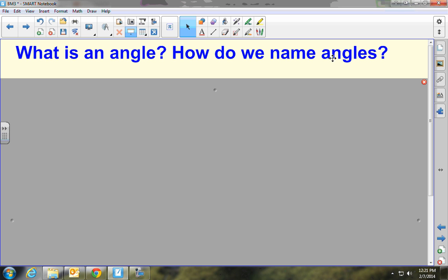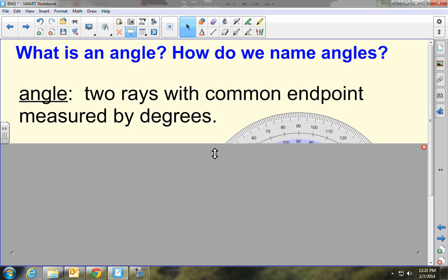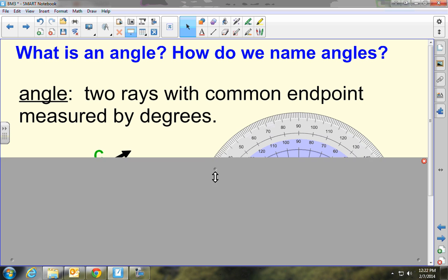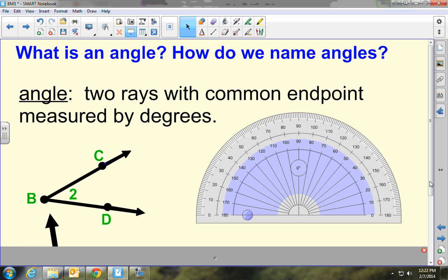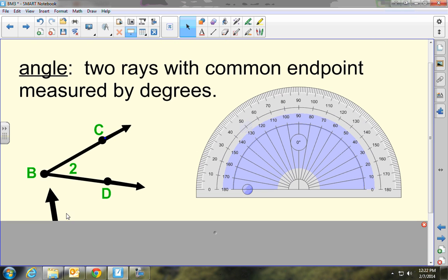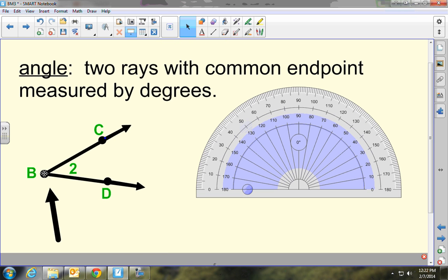Okay, so first off, let's start by defining what an angle is and how do we name angles. Well, the definition of an angle is two rays with a common endpoint measured by degrees. You can remember that a ray is simply a line with one endpoint and one end that goes on forever. So in this case, we've got two rays that meet here at B, which is the common endpoint. We call that point right there where they meet, we call that the vertex.